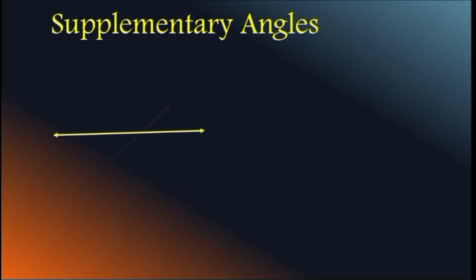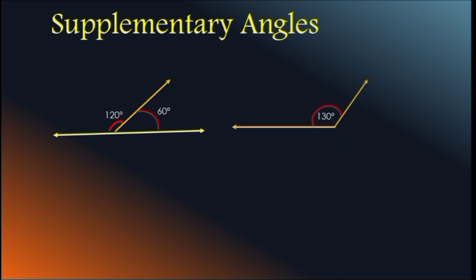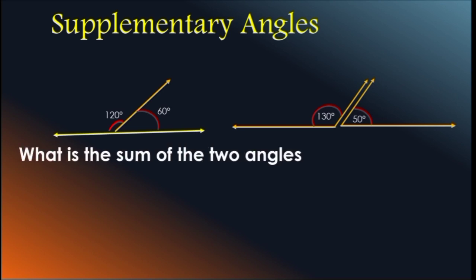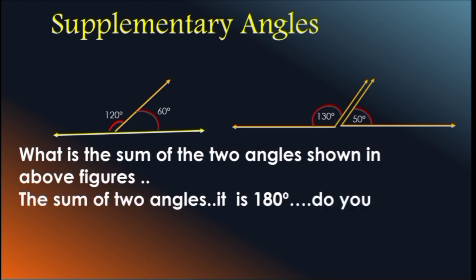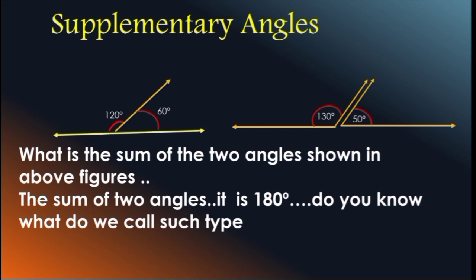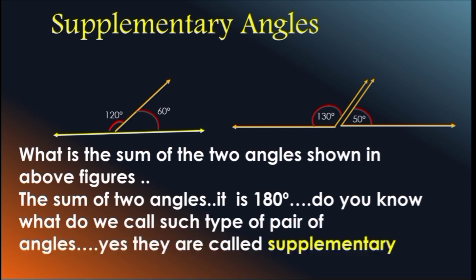Supplementary Angles. Look at the figure — here it is making 120 degrees and 60 degrees. And look at the 2nd figure — here it is 130 degrees and one more angle is 50 degrees. What do you observe? The sum of the 2 angles is equal to 180 degrees. So, the sum of the 2 angles shown in our figures is 180 degrees. Yes, they are called Supplementary Angles.